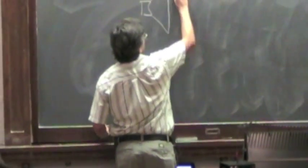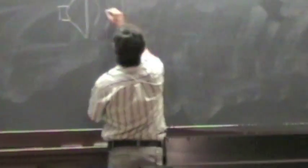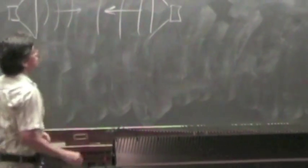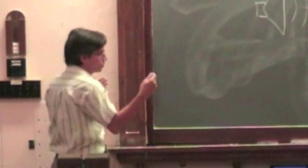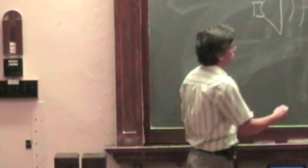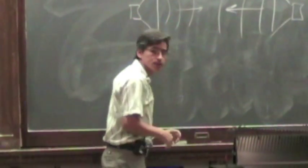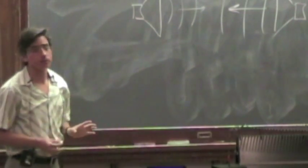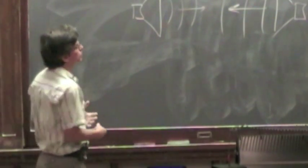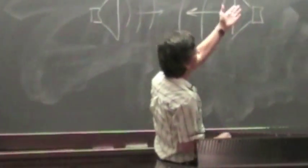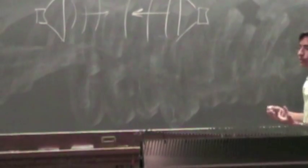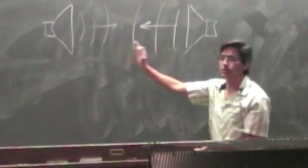One possibility would be to have two speakers — one producing sound pointed that way so that wave moves to the right, and then you put in front of it another speaker producing sound waves in the opposite direction. If the two speakers are connected to the same source, they're going to be doing exactly the same thing. That means the waves produced by the two speakers are going to have the same wavelength, and if the speakers are identical, they will have the same amplitude.